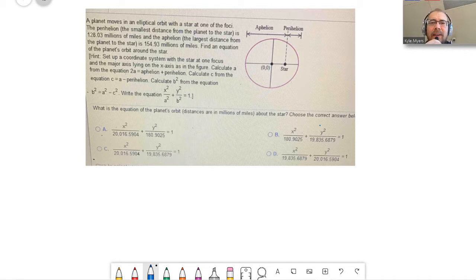Let's go ahead and dive right into it. We have a planet moving in an elliptical orbit with a star at one of the foci. The perihelion, which is a term I've never heard of before, the smallest distance from the planet to the star, is 128.03 millions of miles, and the aphelion, the largest distance from the planet to the star, is 154.93 millions of miles. Find an equation of the planet's orbit around the star.